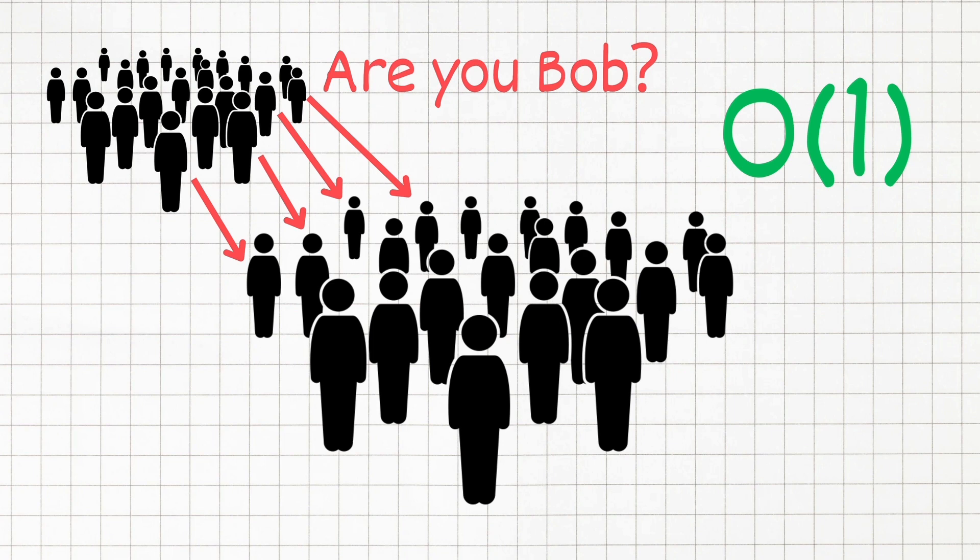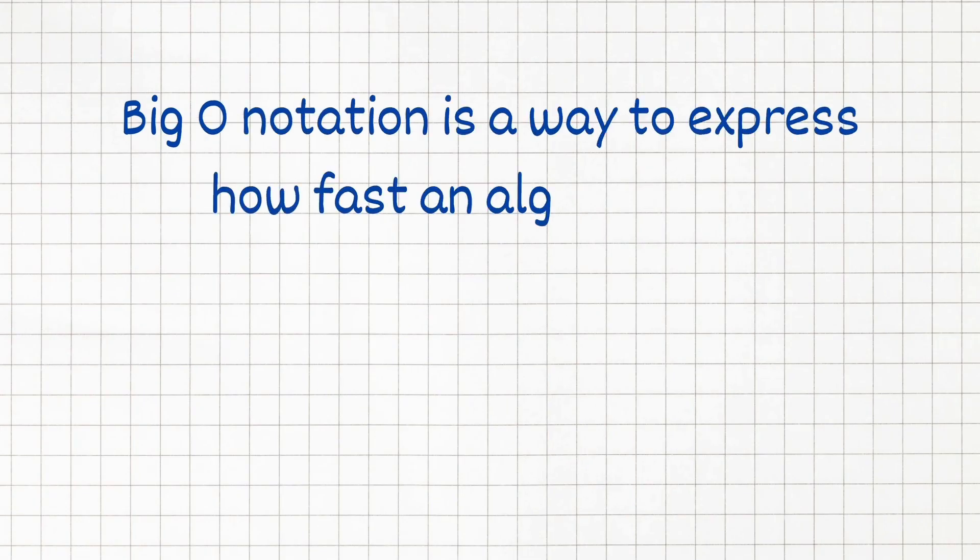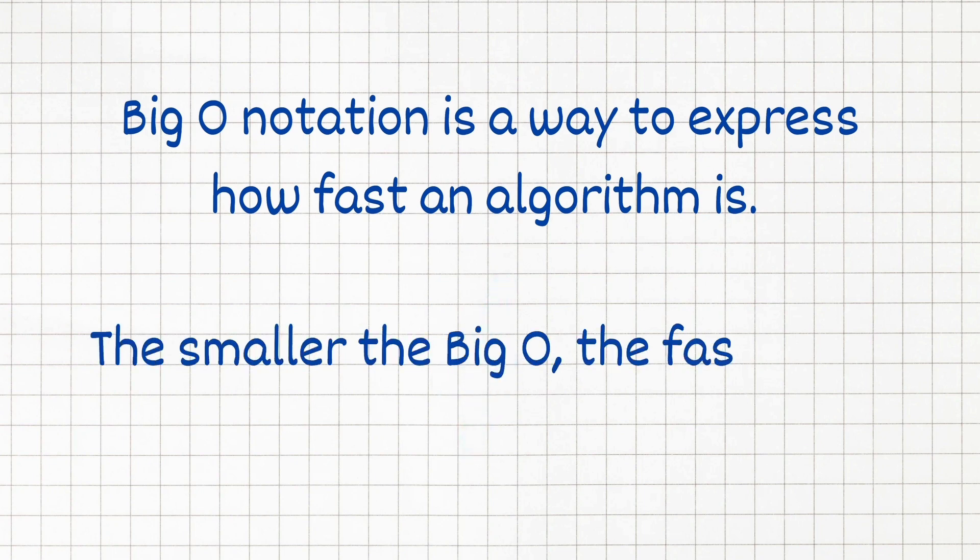As you can see different approaches result in different time complexities. And that's what Big O notation helps us to quantify. Big O notation is a way to express how fast an algorithm is. You can think of it like speed limit of a function or algorithm. The smaller the Big O, the faster the algorithm runs.